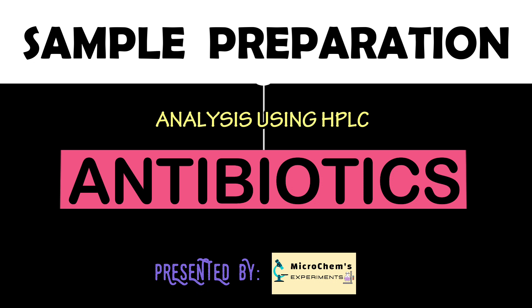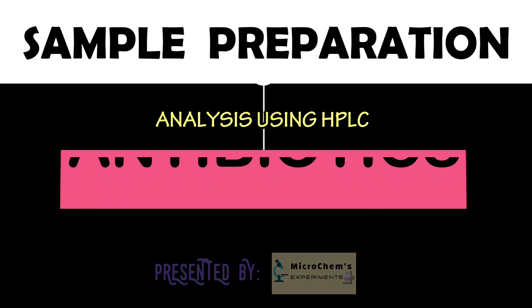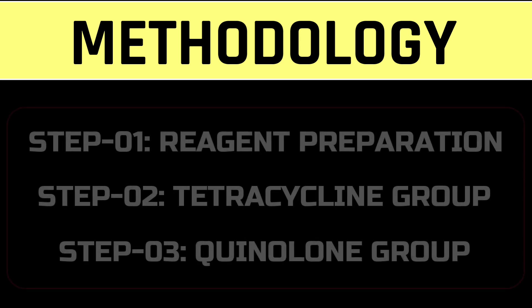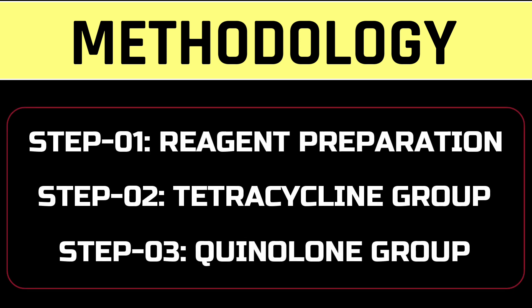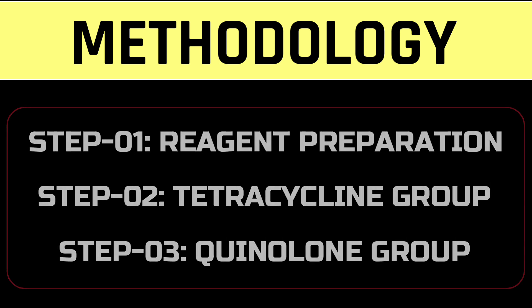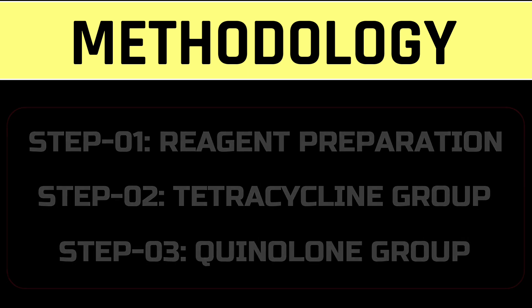We can prepare a sample for the analysis of antibiotics by following three steps. The first step describes reagent preparation. The second step describes sample preparation for the tetracycline class of antibiotic test, and the third step describes sample preparation for the quinolone class of antibiotic test.